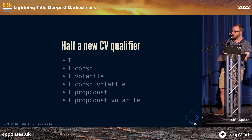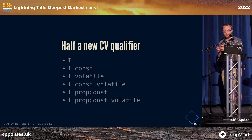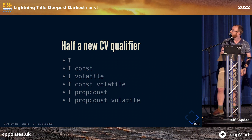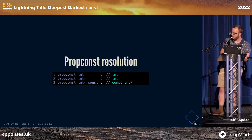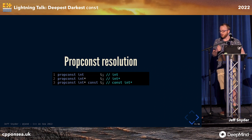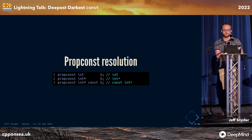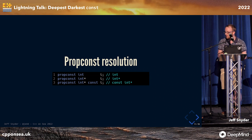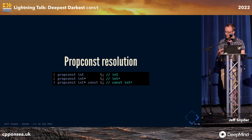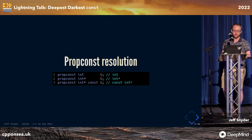It's half a new CV qualifier because it's not like we're adding a full new CV qualifier that would double the number of combinations — you've only got six rather than four. It's got this resolution mechanic where basically what it means is: if you have a pointer to prop const int, then if the pointer is const, then the int will be const. It's kind of reaching out beyond its own type, but it plays out quite nicely when you actually use it.